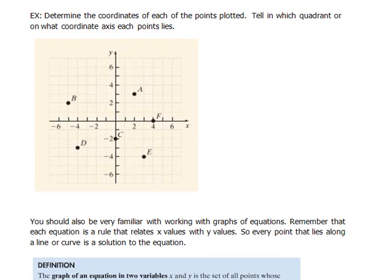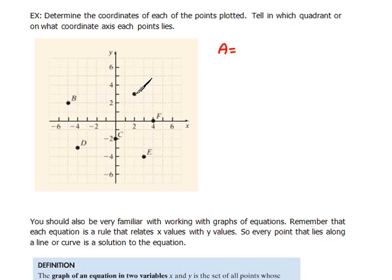Now let's go backwards. Here they're giving us some points and want us to tell the coordinates and the quadrant. For A, to get there we go 2 in the x direction and 3 in the y direction — so that would be the point (2, 3), and it is in quadrant 1.